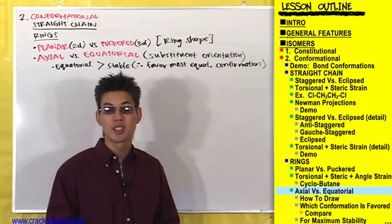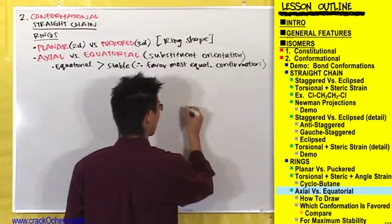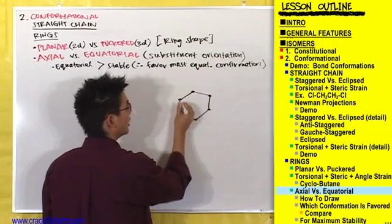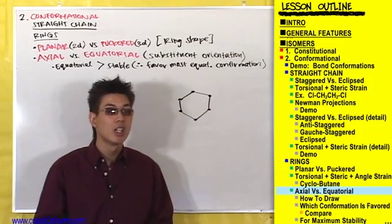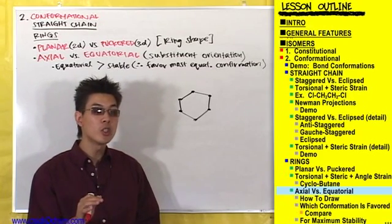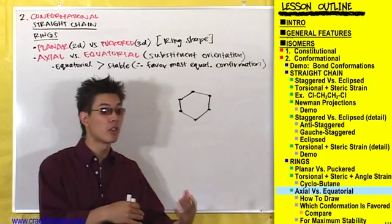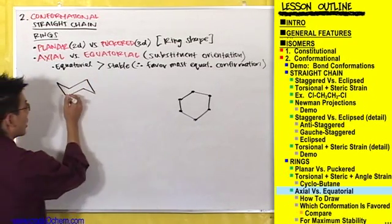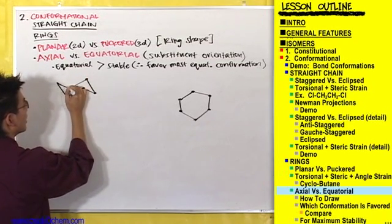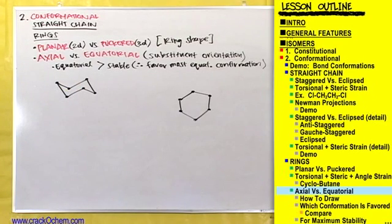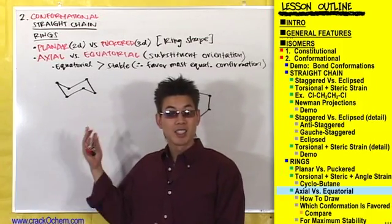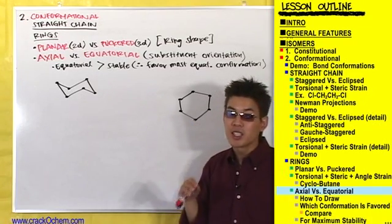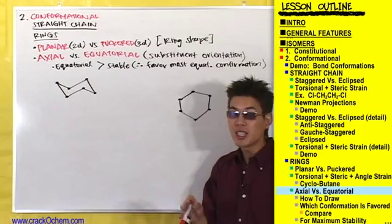There are two ways you can draw cyclohexane. You can draw it in the planar 2D conformation with six carbons in the ring, or you can draw it in the puckered 3D conformation, also known as a chair conformation. Six-carbon cyclohexane rings are most stable in the chair form.